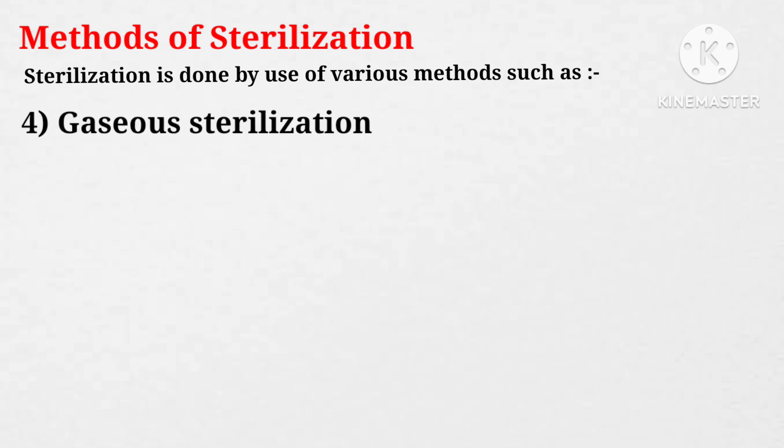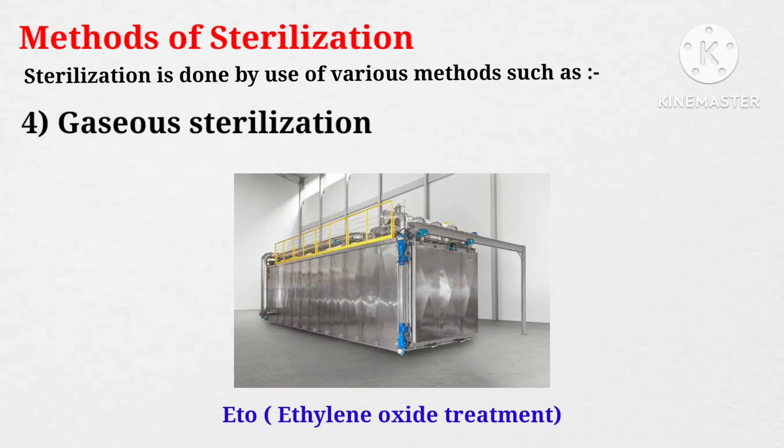The fourth method is gaseous sterilization. Gaseous sterilization is the treatment of objects or material with a chemical in the gaseous or vapor state to destroy all microorganisms with which they have been contaminated.